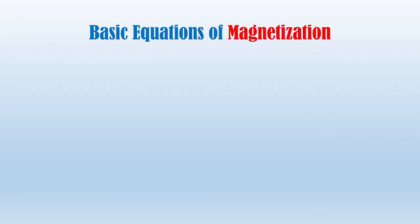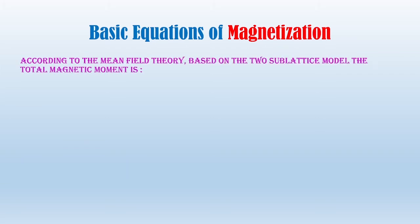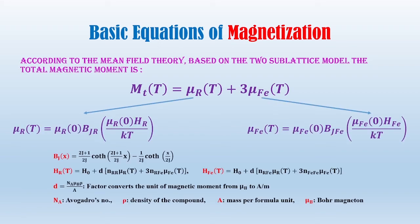Basic equations of magnetization. According to mean field theory based on the two sublattice model, the total magnetization is equal to the molecular field of the rare earth plus three iron sublattices, where the Brillouin function controls the temperature dependence of each sublattice moment.